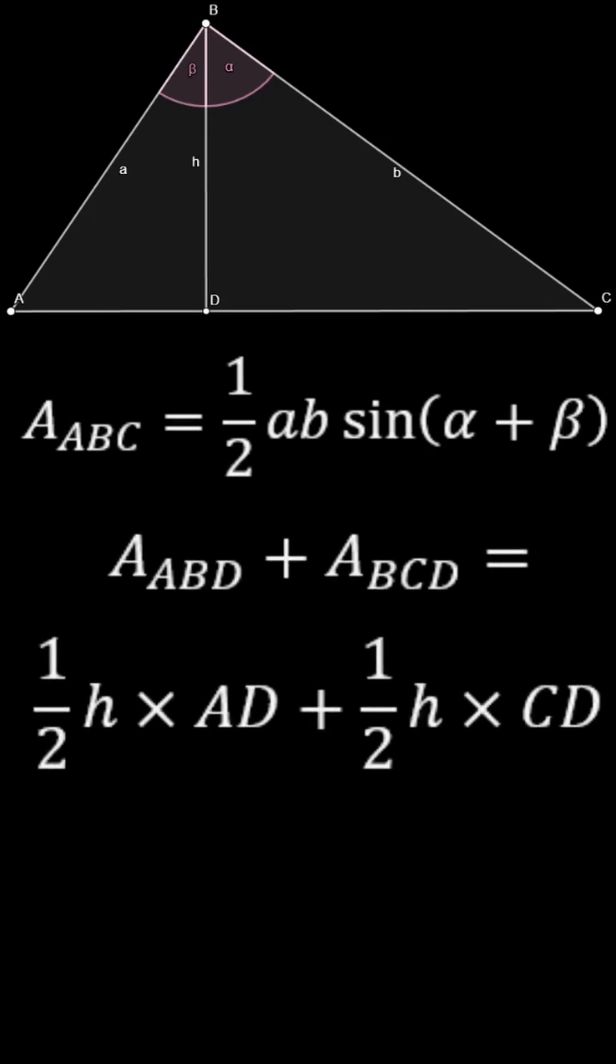Also, because they are right triangles, we can express certain side lengths of them in terms of trigonometric functions of the angles alpha and beta.